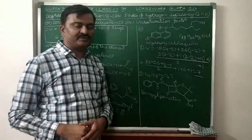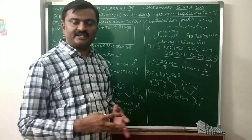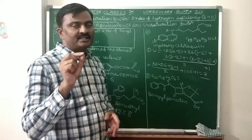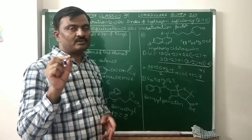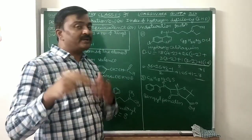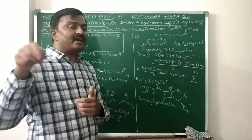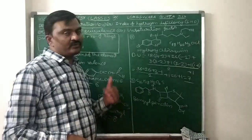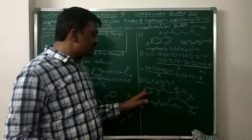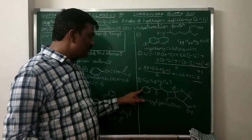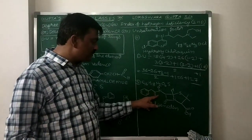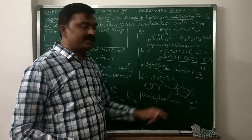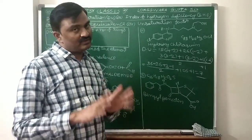Now come to the fifth example: benzyl penicillin — a familiar drug. Based on the structure, what is the degree of unsaturation? How many pi bonds? 1, 2, 3, 4, 5, 6 pi bonds. How many rings? 1, 2, 3 rings. 6 plus 3 equals 9 — degree of unsaturation is 9.